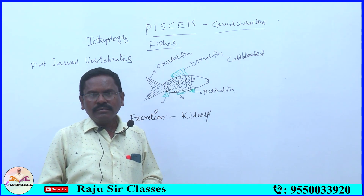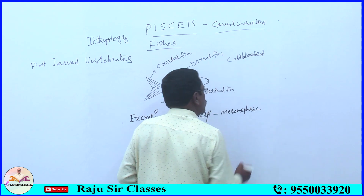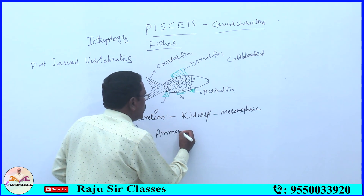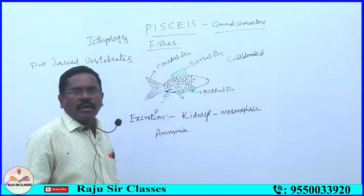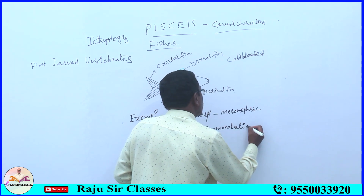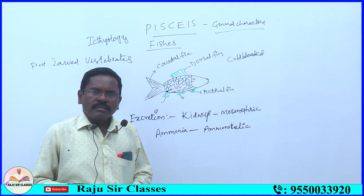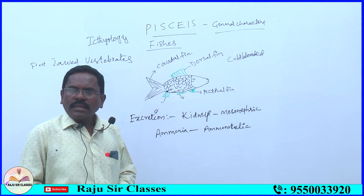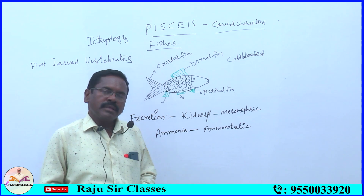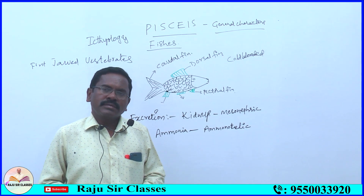Ureters directly open out through cloaca. Kidneys are mesonephric type. The excretory product is ammonia — ammonia is the chief excretory product. Therefore, fishes are called ammonotelic. The animals in which ammonia is the major excretory product are called ammonotelic animals. All aquatic animals — not only fishes — are ammonotelic.